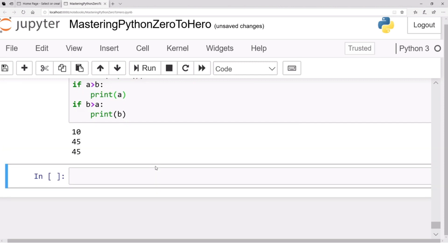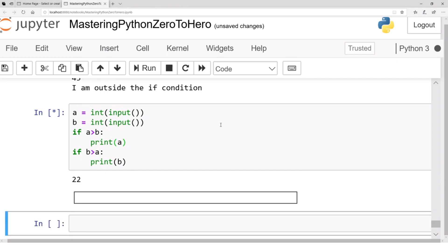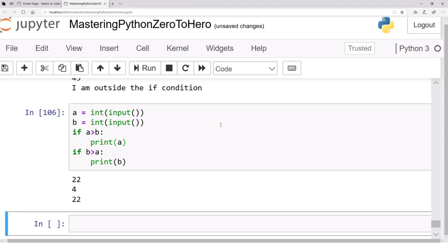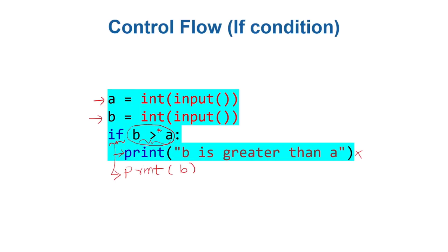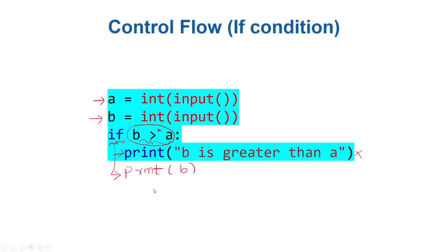Let's test it: `a = 10`, `b = 45` — the answer is 45. Run again: `a = 22`, `b = 4` — the result is 22 because 22 is bigger. We are done with the task. We used two `if` conditions to print the bigger number from keyboard input. In the next video I'll cover the `else` statement, which is more powerful and readable — what we just did with two `if` conditions can be achieved with a single `if-else`.